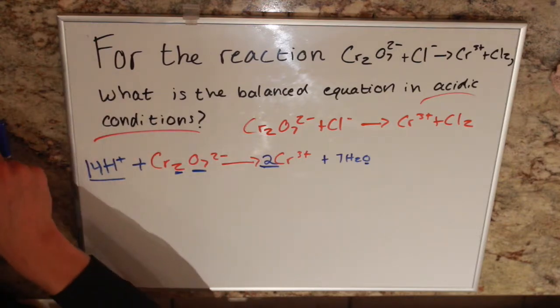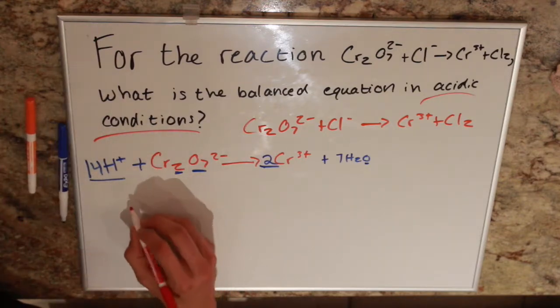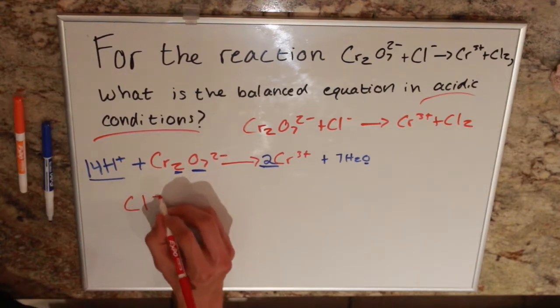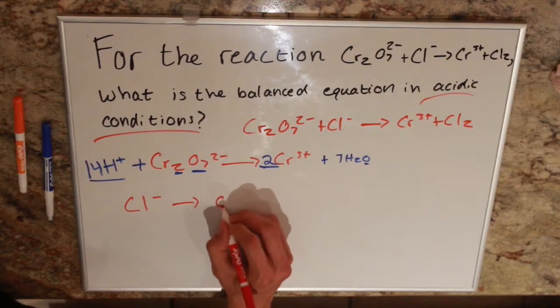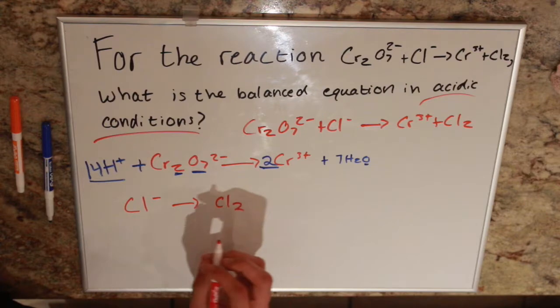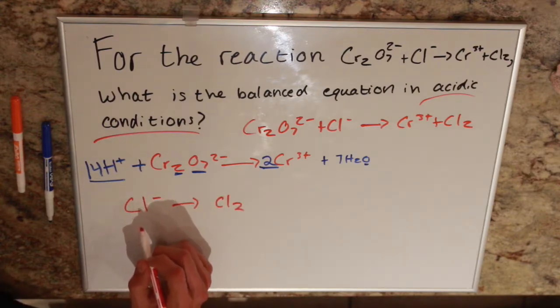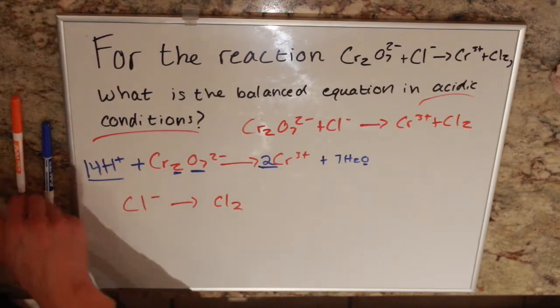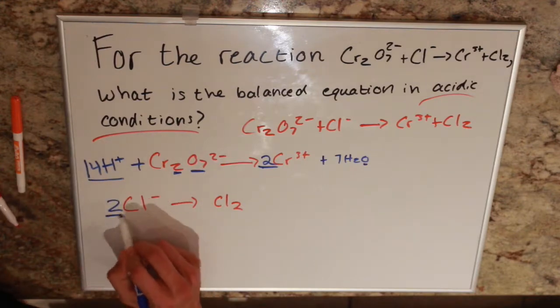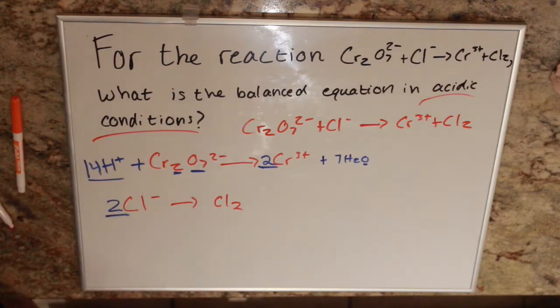So now all we have to do is balance our chlorine side. We have Cl- yields Cl2. Pretty simple, what I'm going to do is throw 2 in front of it and those two guys are balanced.